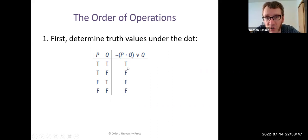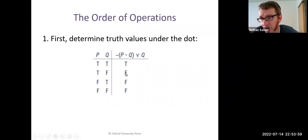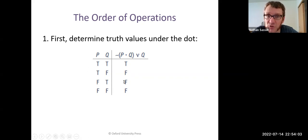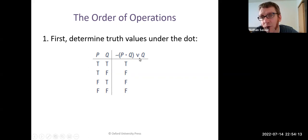In this case, we start with the dot — it's all the way inside the parentheses and ranges only over P and Q, which are simple statements. Line one: P is true and Q is true, so P and Q is true — the dot is true. Line two: P is true and Q is false, so the conjunction is false because they're not both true. Line three is false and true, so also false. Line four: false and false makes false. Next, we move to the tilde.